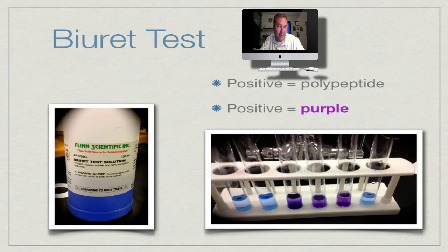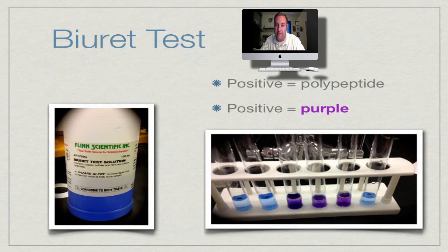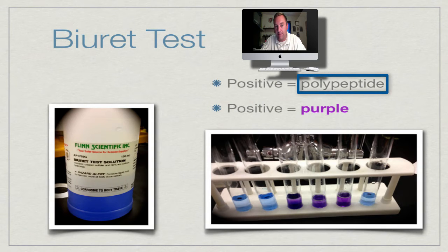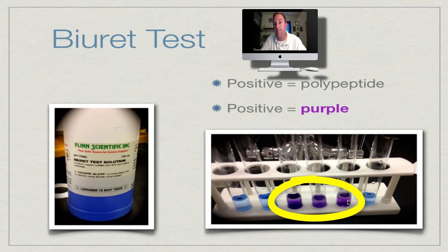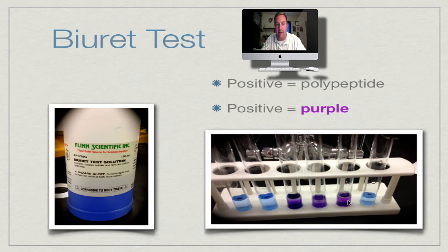The first test is the Biuret test. Like the Benedict and Barfoed solutions from last week, this is a copper sulfate-type test, so it will have typical blue coloring. A positive Biuret test means the protein is a polypeptide, and a positive result turns purple — as you can see in the picture. You should expect three positive tests.